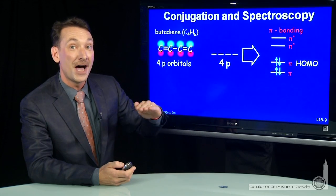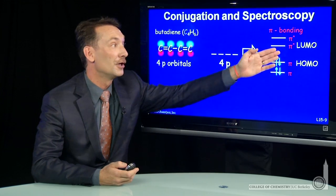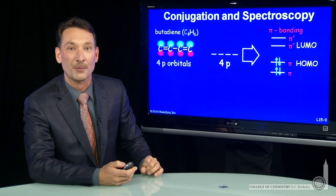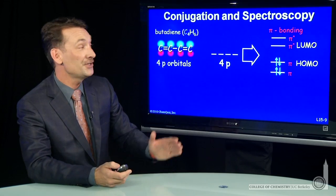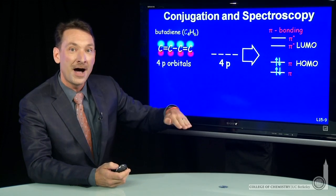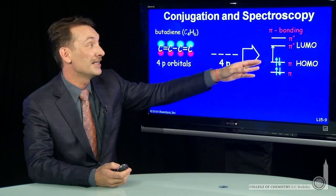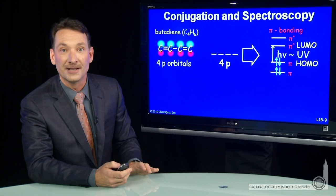The lowest unoccupied molecular orbital, or LUMO, is a pi star, or antibonding orbital. And it's common that transitions in these conjugated systems are a pi to pi star transition. In this case, for butadiene, that transition happens in the ultraviolet.